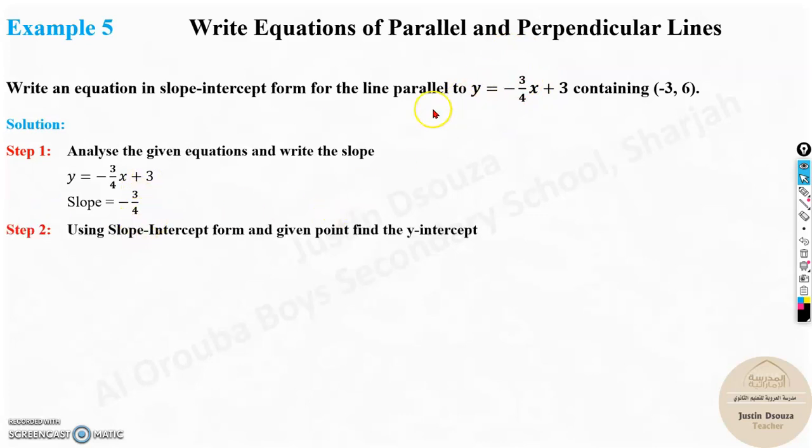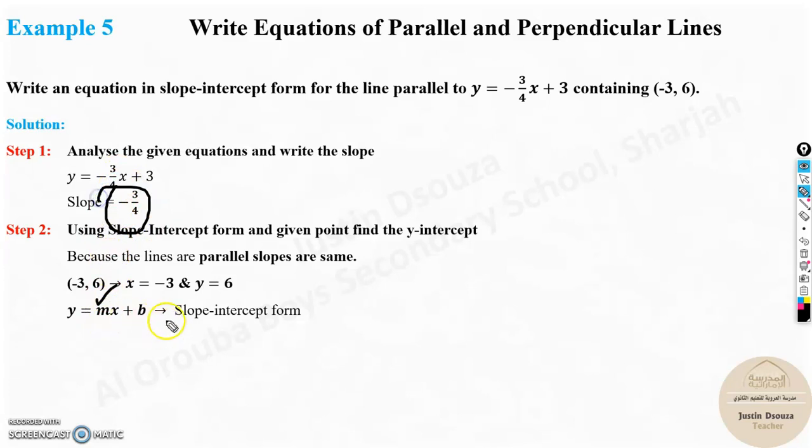Now we know the slopes will be same for parallel lines, but we need to write the equation in the slope intercept form. If we recall the slope intercept form, let us see the slope intercept form over here. Y is equal to mx plus b. We know the slope is m. How do we find the b? That is the y-intercept. They have given us the points x and y. So now what you do is substitute the x and y values and the slope. Then you can find the b value.